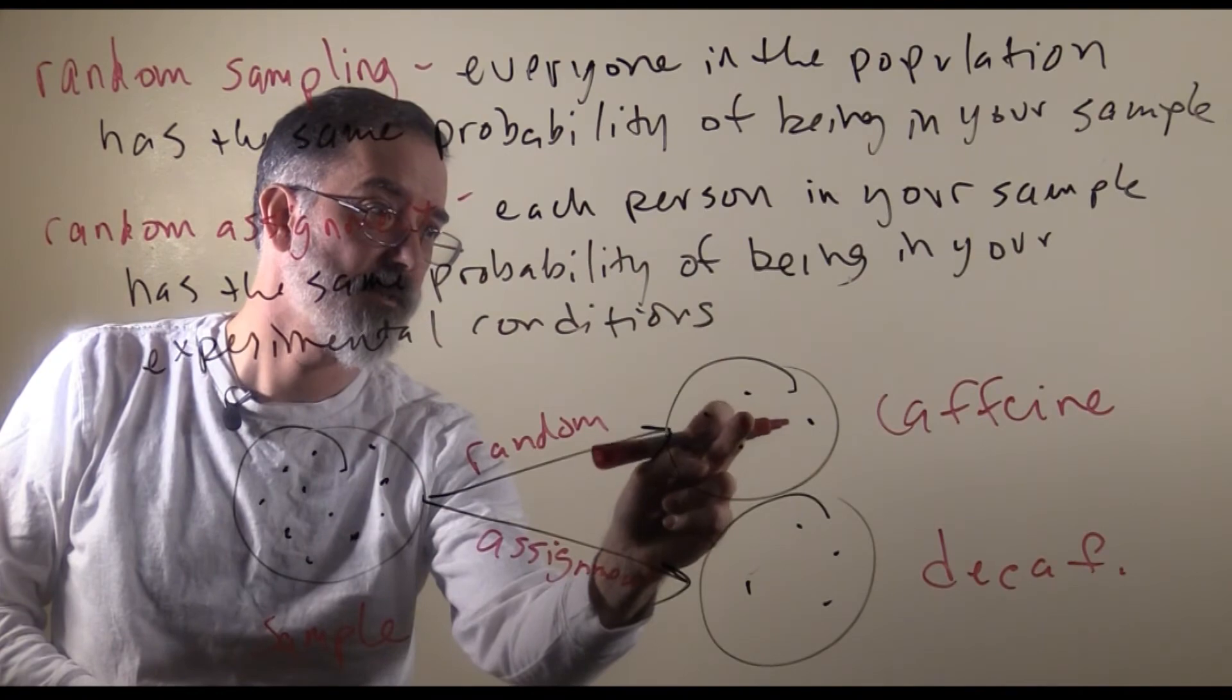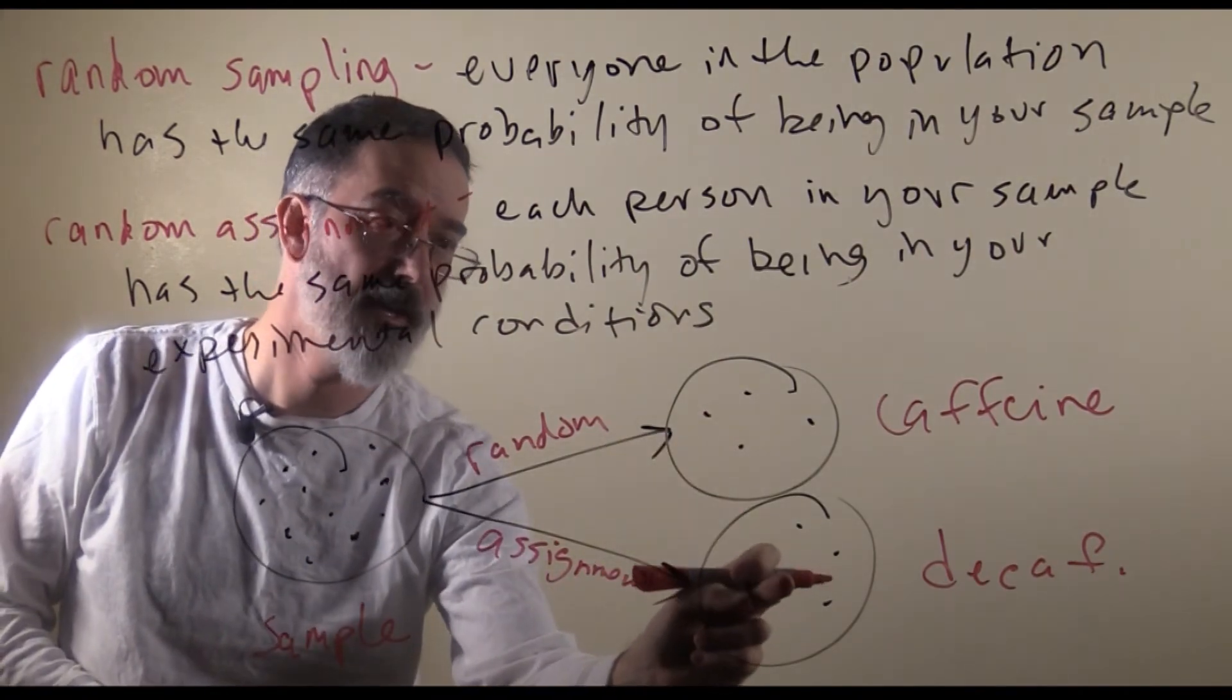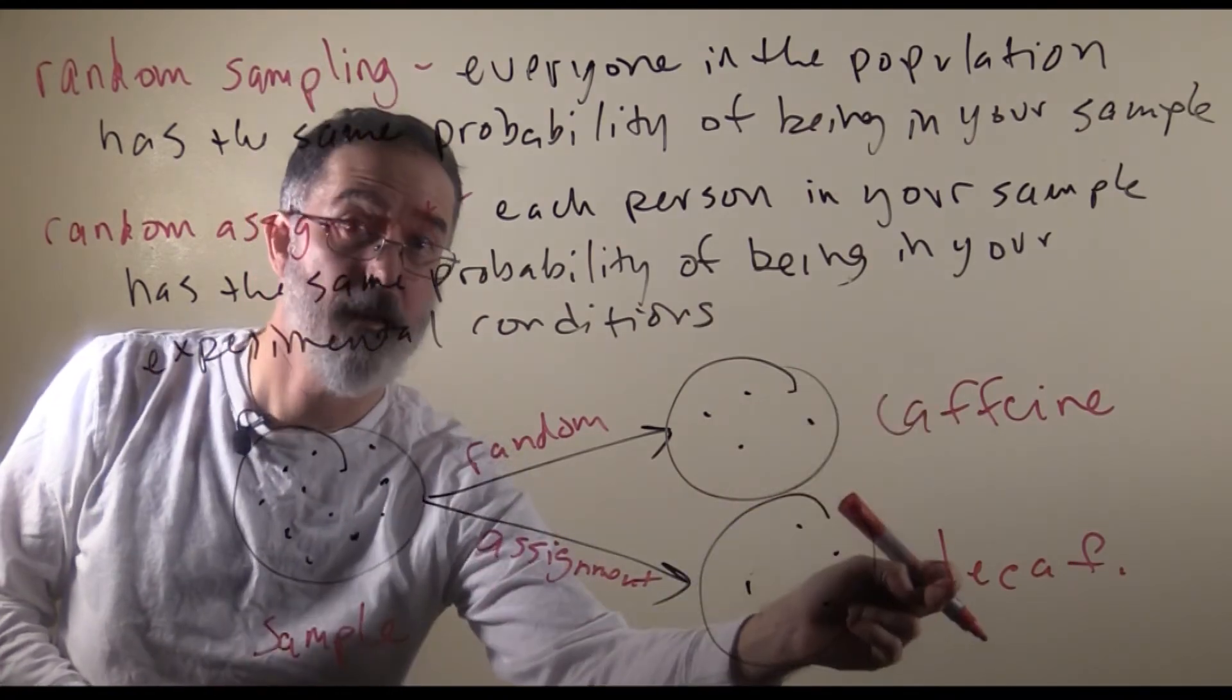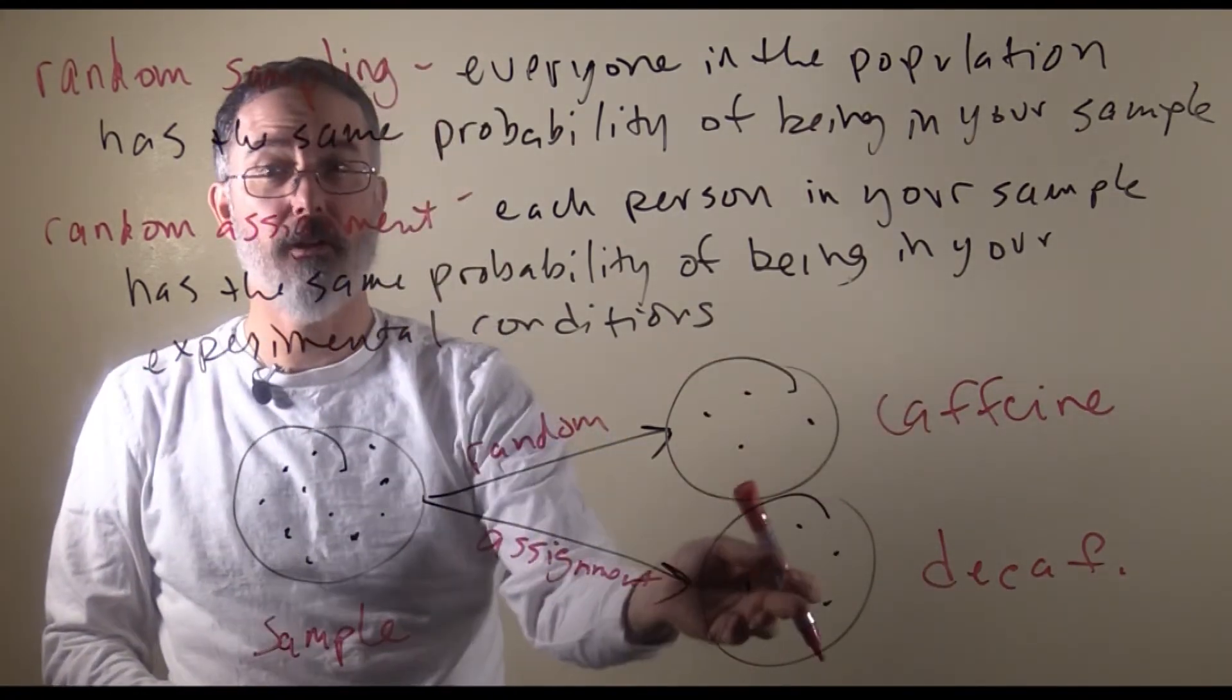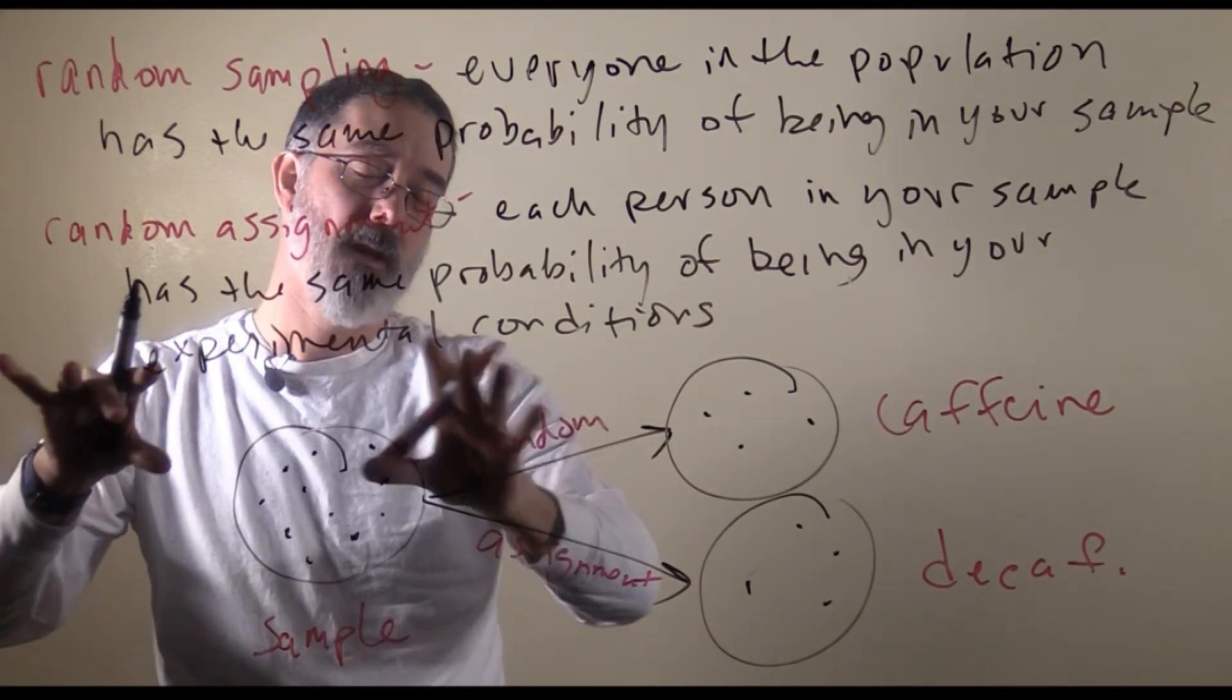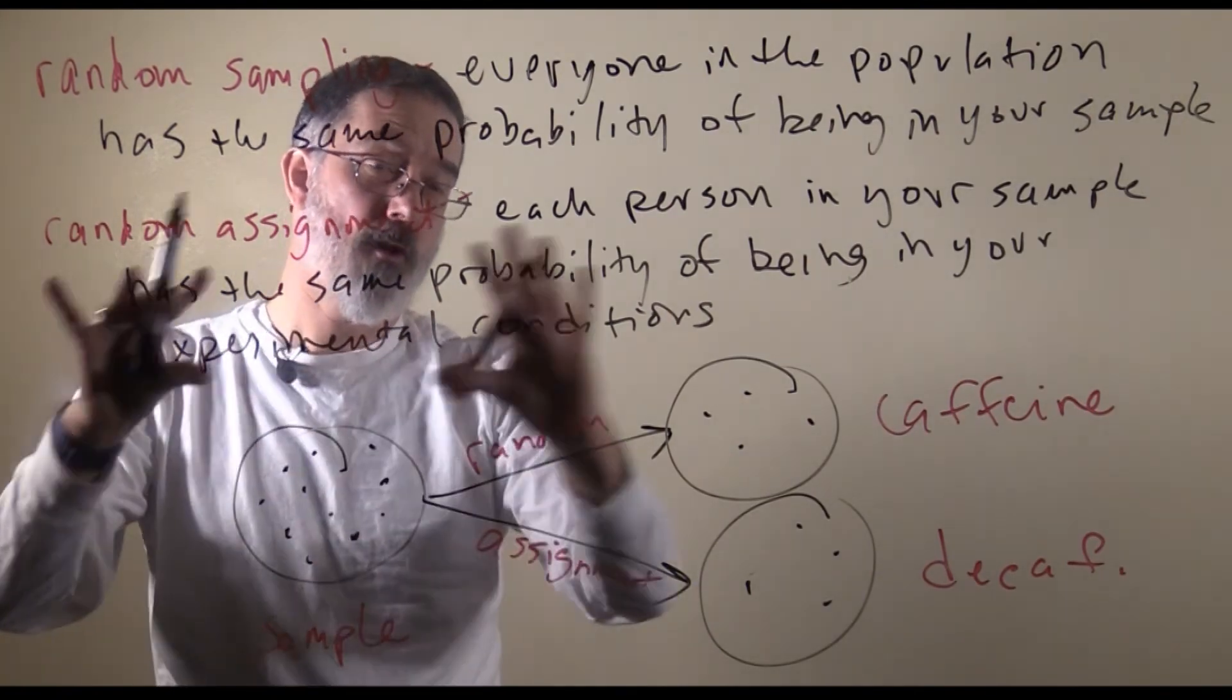That balances out all the characteristics of people in the caffeine group with those in the decaf group. So, the only difference between these two groups is what you have done to them. The reason that is so critical is that these experiments are the only way that scientists can get strong evidence